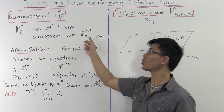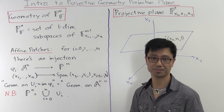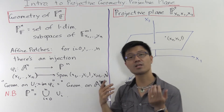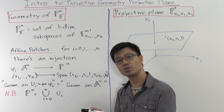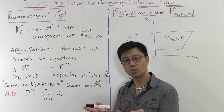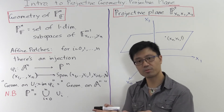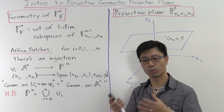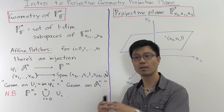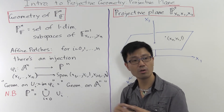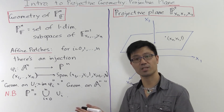Usually we'll use coordinates X0 up to Xn for that. So remember in the case of the projective line, how do we put the geometry on that? Well, the idea was to use basic concepts from manifold theory. We'll describe it on certain subsets of it, where these geometries are well known, and then we glue these together. That's the basic idea.